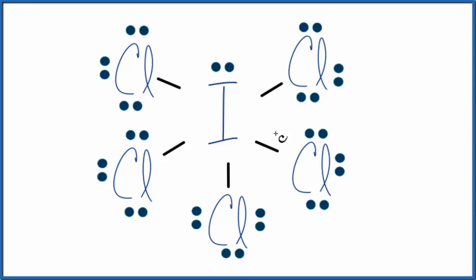In this video we'll figure out the molecular geometry for ICl5. So the first thing we need to do to figure out the molecular geometry is write the Lewis structure. So this is the Lewis structure for ICl5.